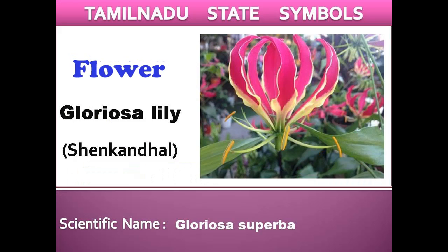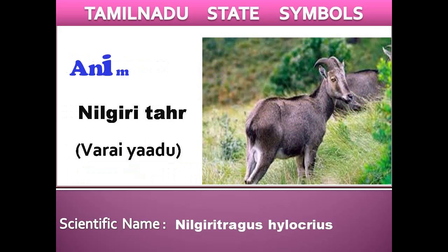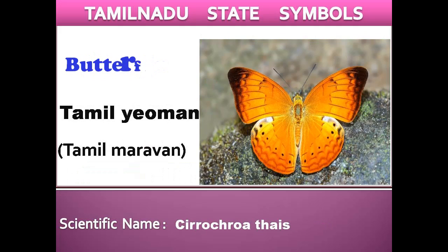Flower: Gloriosa Lily. Animal: Nilgiri Tahr. Butterfly: Tamil Yeoman.